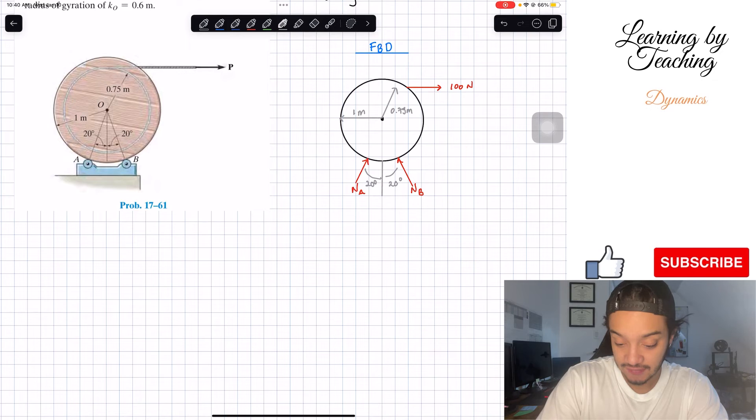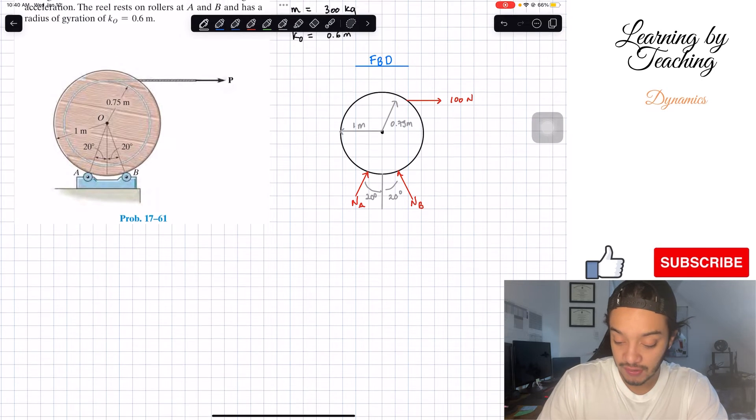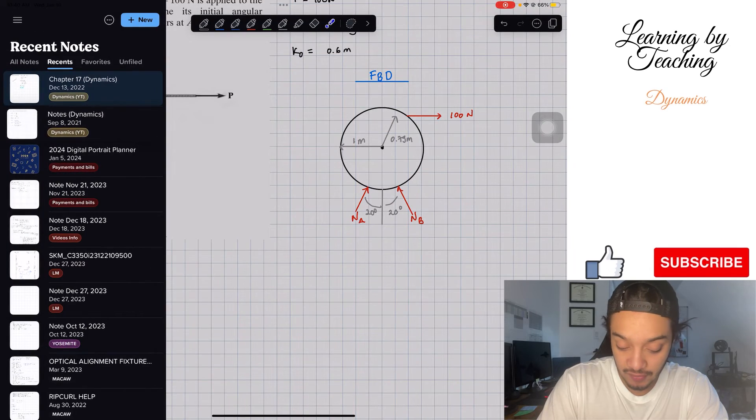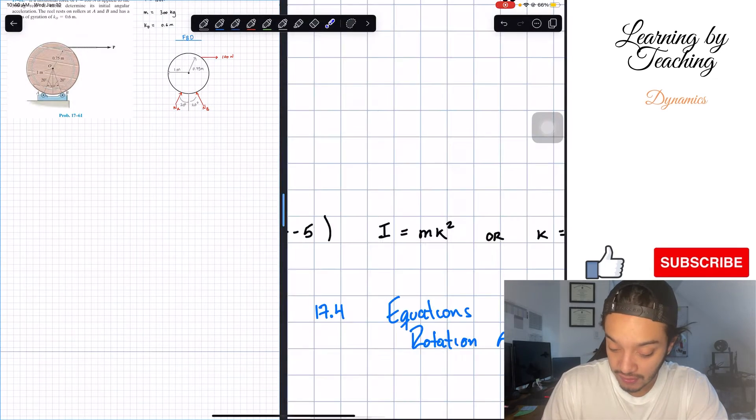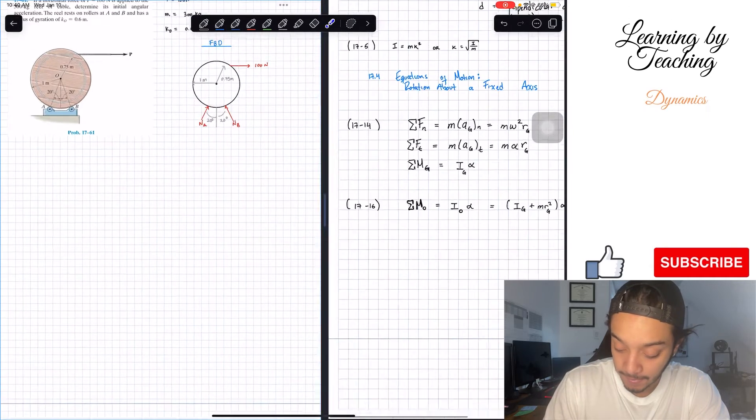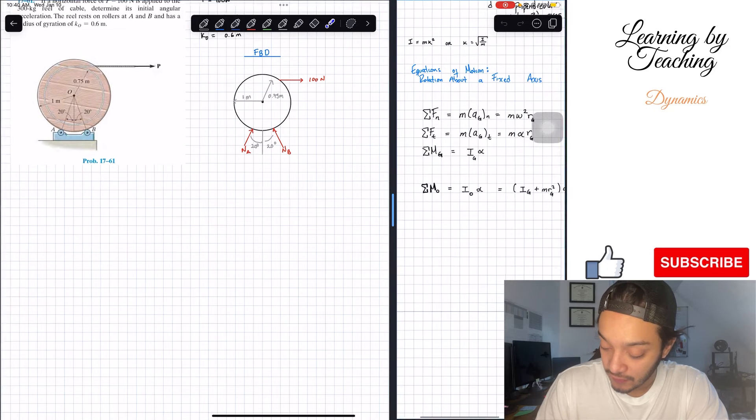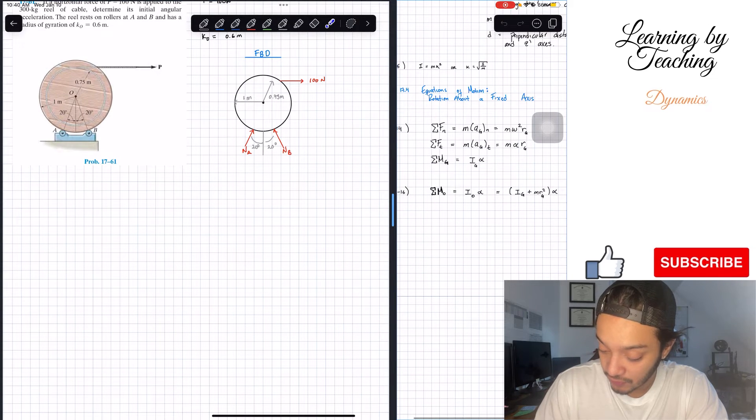Now, since we're in chapter 17 regarding rotation about an axis, we're going to take a look at those equations. If you want to find the angular acceleration, we can do a summation of forces in the tangential, or we can do a summation of moments above my center of gravity and find our acceleration.